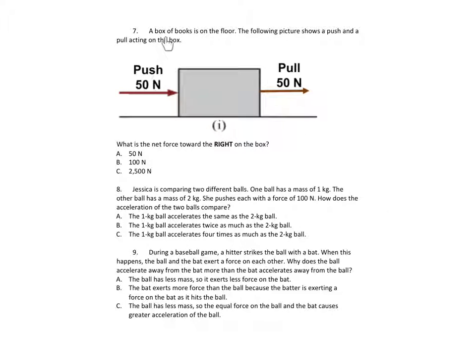Number 7. A box of books is on the floor. The following picture shows a push and a pull acting on the box. What is the net force toward the right on the box? A. 50 N. B. 100 N. C. 2,500 N.